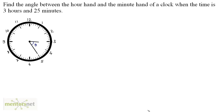Let's complete this video by solving a question. Find the angle between the hour hand and the minute hand of a clock when the time is 3 hours 25 minutes. You have been given this clock showing 3 hours 25 minutes and you are asked to find the angle theta. We will calculate the angle traced by the hour hand and the angle traced by the minute hand, naming them x and y respectively. Theta equals y minus x.